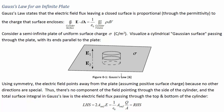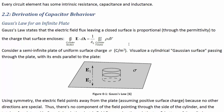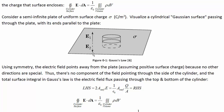Section 2.2, derivation of capacitor behavior. Gauss's law for an infinite plate — this is a review of material from first year. Gauss's law says that the net flux leaving a surface is proportional to the charge enclosed by that surface through the permittivity. Consider a semi-infinite plate with surface charge sigma in coulombs per square meter. Really close to the plate, there's no special direction for the electric field to go except directly away from the plate. If the plate is positively charged, the electric field points away on the top and away on the bottom.